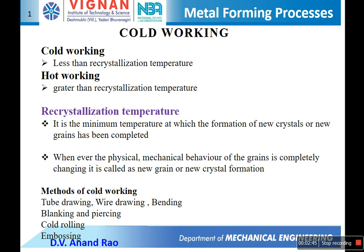Metal forming processes are mainly classified into two types based on working temperature. First is cold working and second is hot working. In cold working, the operating temperature is less than the recrystallization temperature. If the deformation of the material takes place at a temperature higher than the recrystallization temperature, then the process is called hot working.